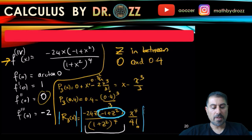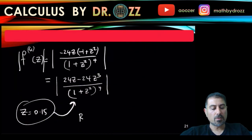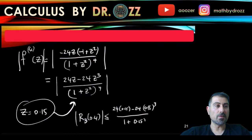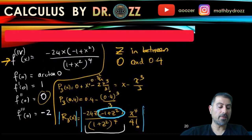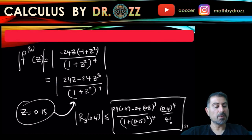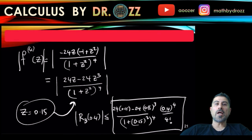Now we're going to look at the absolute value of R3 of 0.4. This is less than or equal to 24 times 0.15 minus 24 times 0.15 cubed, divided by 1 plus 0.15 squared to the power of 4. And I also have x to the fourth divided by 4 factorial, but x is 0.4. So go ahead and calculate this number, and this would be the upper bound of the error by keeping four terms in the sum, and that means I'm choosing the Taylor polynomial of order 3 to estimate arctan of 0.4.